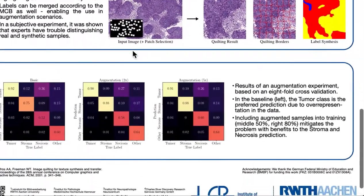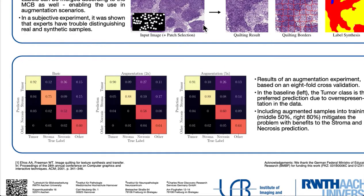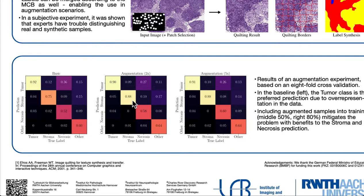To this end we have an evaluation with a tissue classification problem. We have the basic result without augmentation, then twice the amount of data with 50% augmented, and five times the amount of data with 80% augmented. What we see is that particularly for the larger represented class and for the other classes which appear less often, we have an increase in detection rates and a shift from misclassification back into the correct classes.